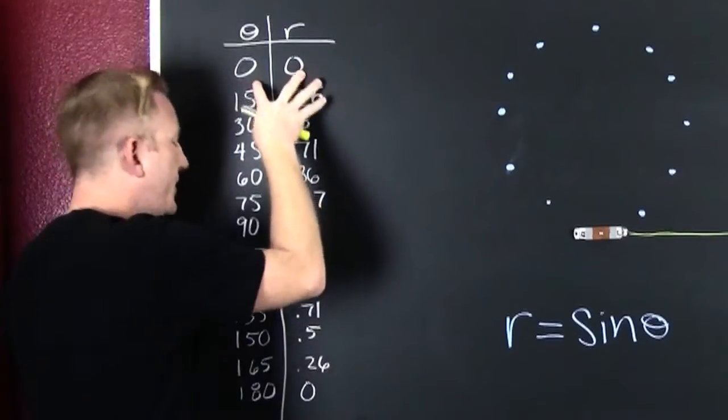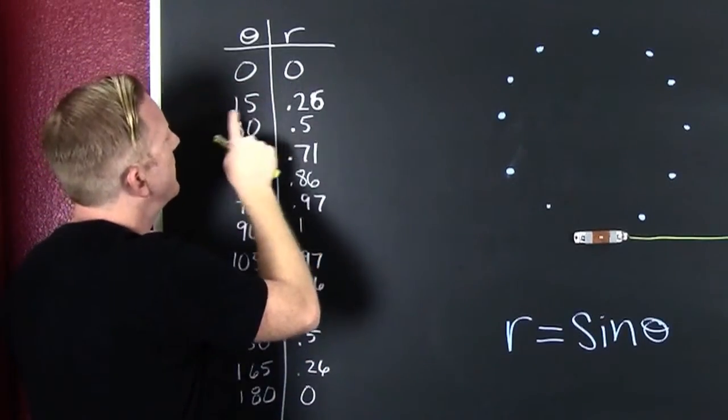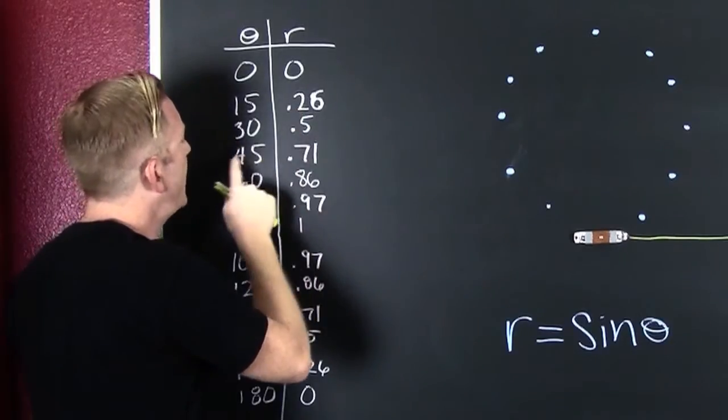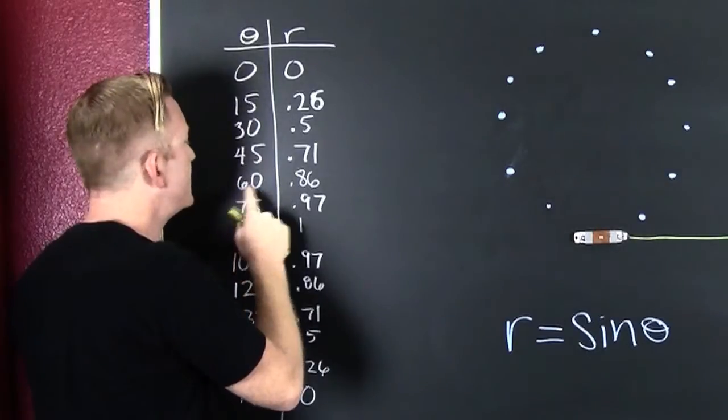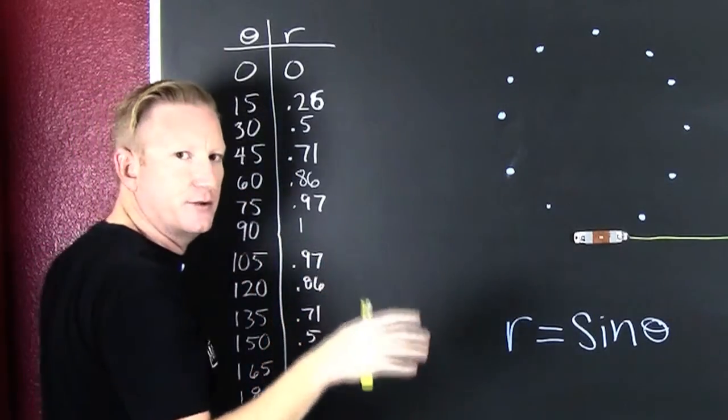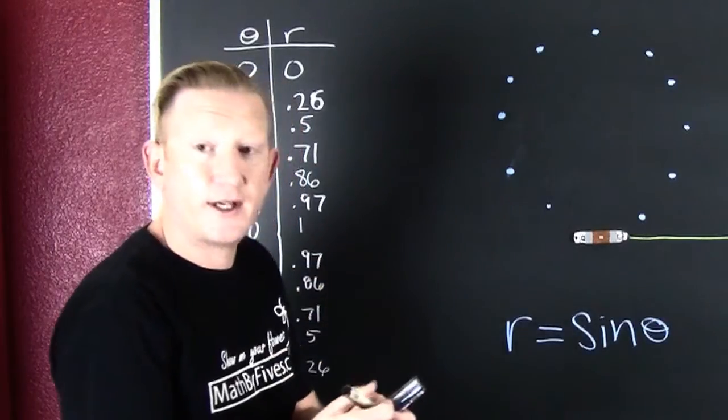We go, and I pre-calculated these guys: the sine of 0 is 0, the sine of 15 is 0.26, the sine of 30 is 0.5, the sine of 45 is 0.71, the sine of 60 is 0.86. These are crude approximations.